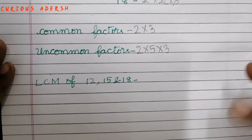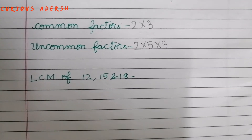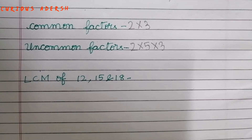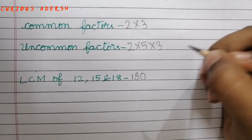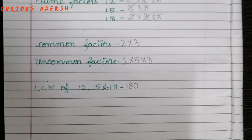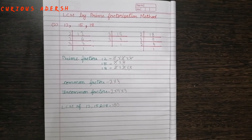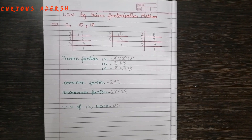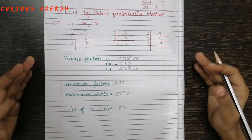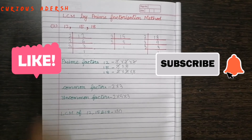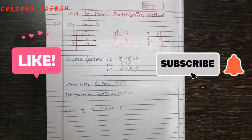Now we'll multiply all these numbers to find the LCM. So the LCM of 12, 15, and 18 is 180. If you liked this video, please give it a thumbs up and please do subscribe to my channel. I'll see you in my next video!